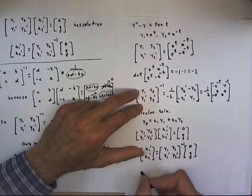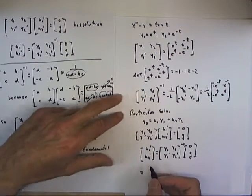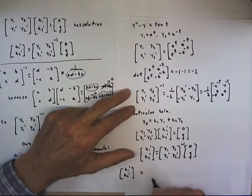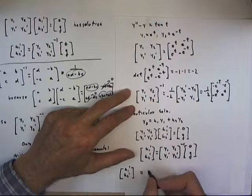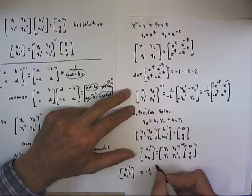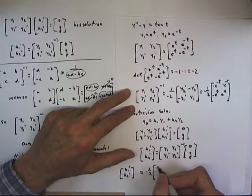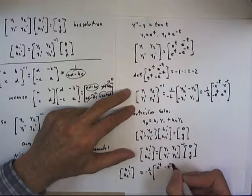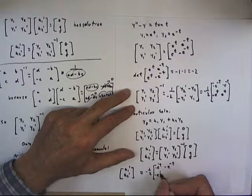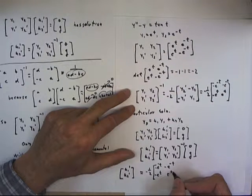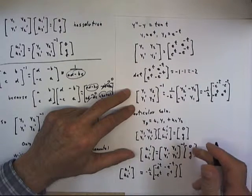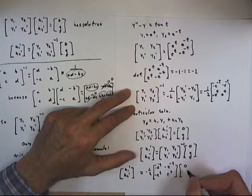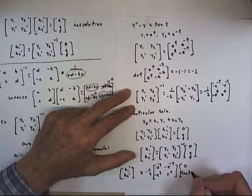Now we write out this solution. u1 prime, u2 prime is going to equal the inverse matrix, which is negative one-half, multiplied by negative e to the t, e to the negative t, and negative e to the negative t, and negative e to the t, e to the t, multiplied by the matrix 0, g. As I pointed out, g is the tangent of t. So we have 0 tangent of t.